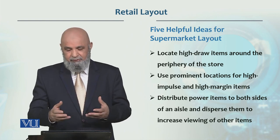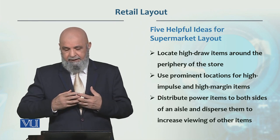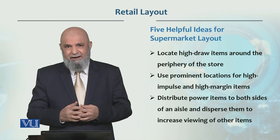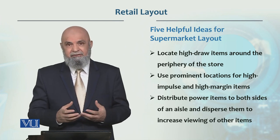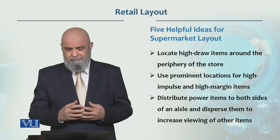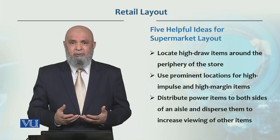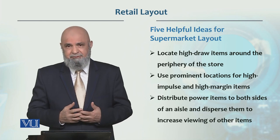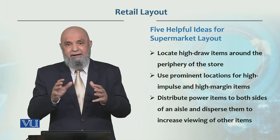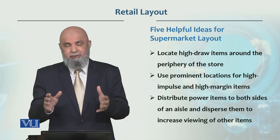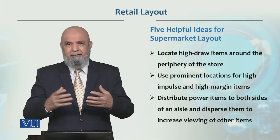Impulse items or high margin items are placed in prominent locations. For example, high margin items like electronic goods — mobile phones — these are high margin items, so they will have a prominent area. They will be near the entrance so the customer encounters them immediately upon entering the store.